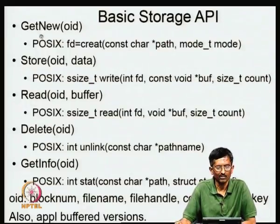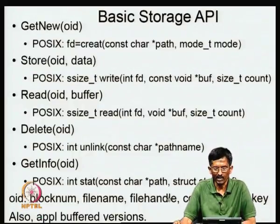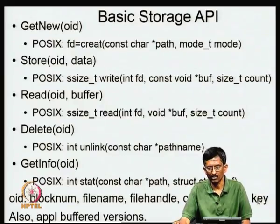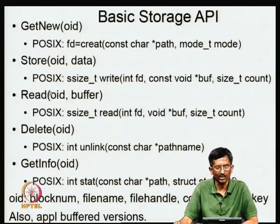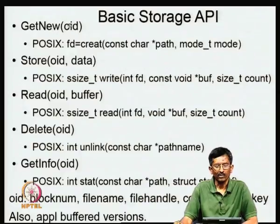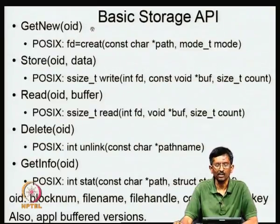Let us say there is something called an object ID, which refers to something you want to access. The object ID can be a block number, a file name, a file handle, a content hash, or a key. At some abstract level, the important ways to interact with a storage system include the ability to create objects, store, read, delete, and get information about the object itself.